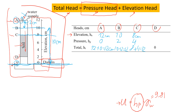You will notice that for points A, B, and C we have the same total head: 12 centimeters. What does this mean? It means there is no water flow from point A to point B to point C. Water can only flow from one point to another if there is a difference in total heads. Since A, B, and C all have the same total head of 12, there is clearly no water flow between them.